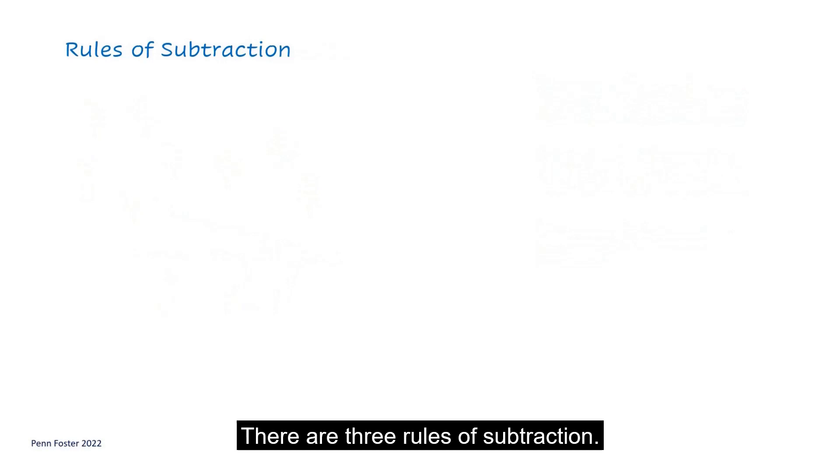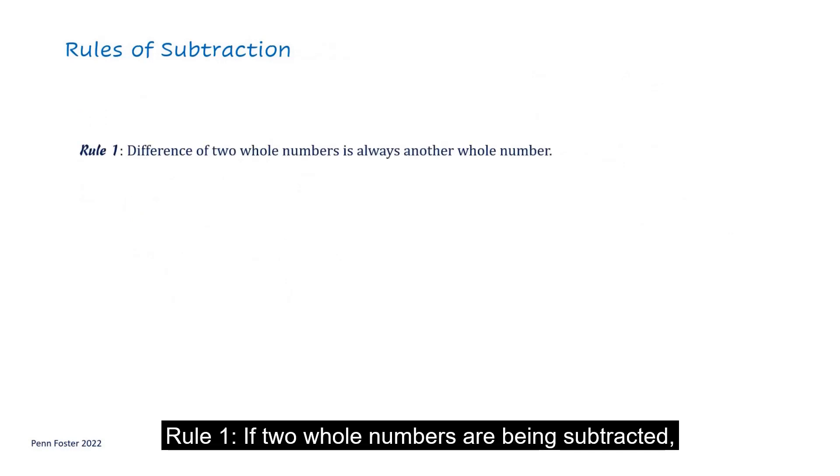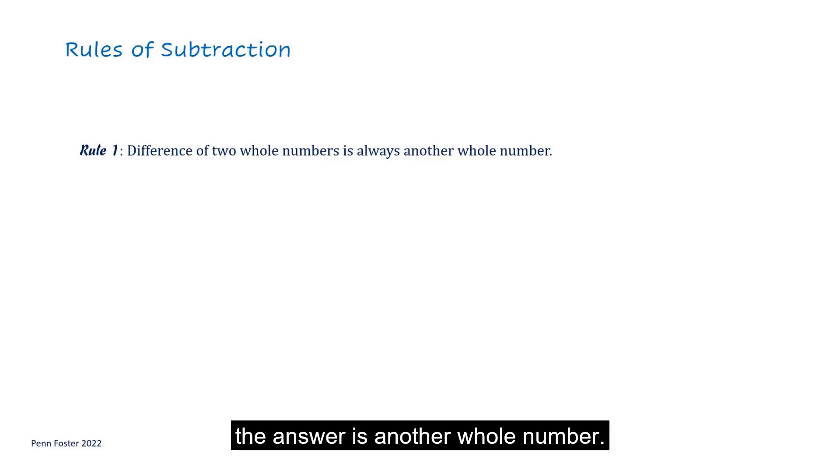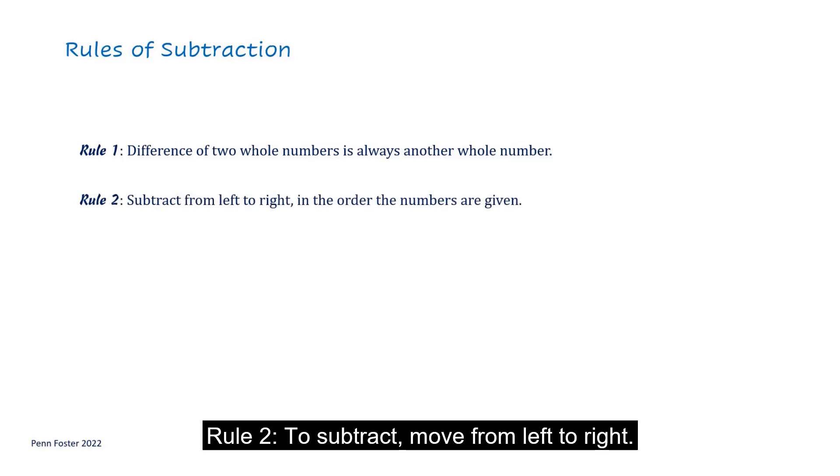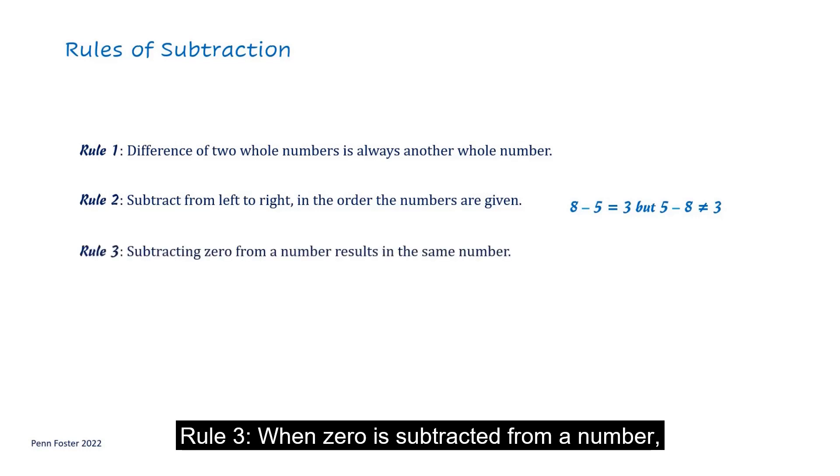There are three rules of subtraction. Rule number one: if two whole numbers are being subtracted, the answer is another whole number. Rule number two: to subtract, move from left to right. Rule number three: when zero is subtracted from a number, the difference is the beginning number.